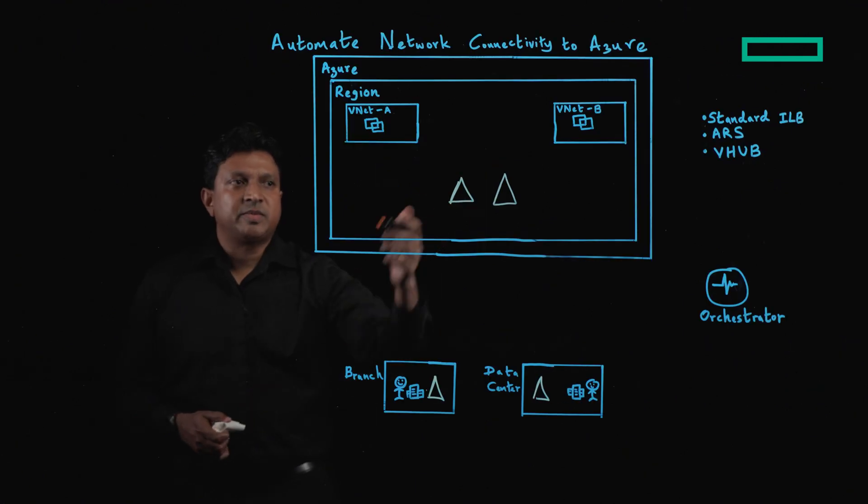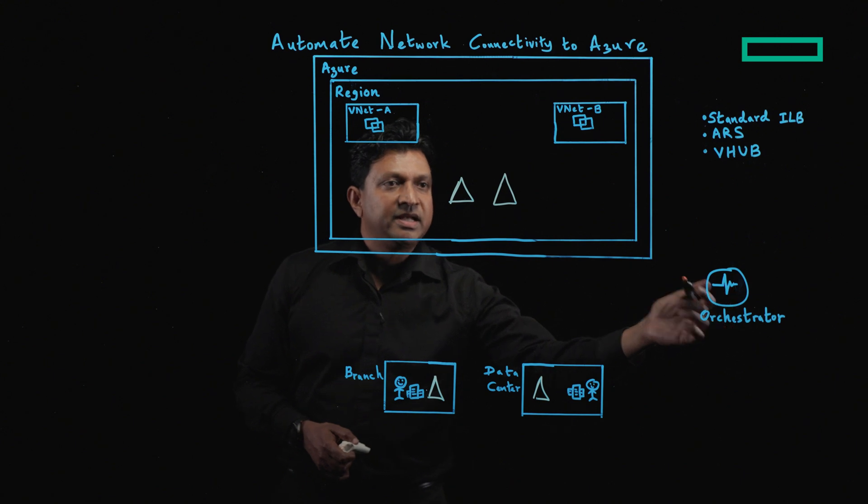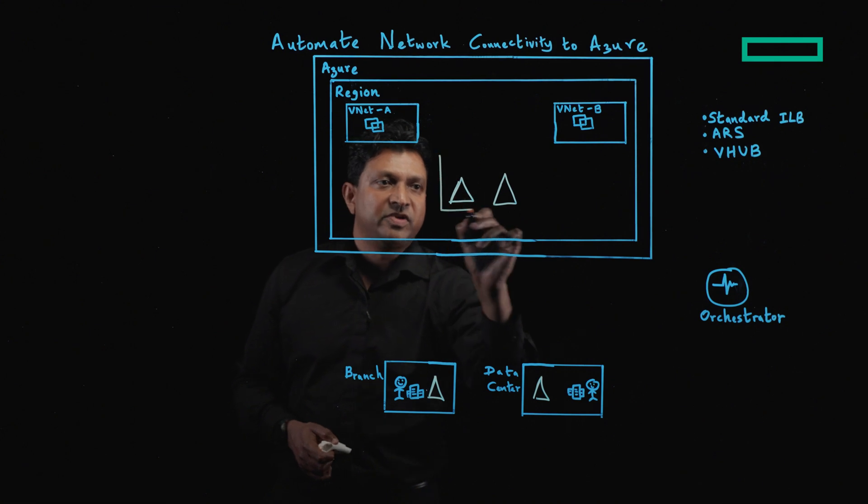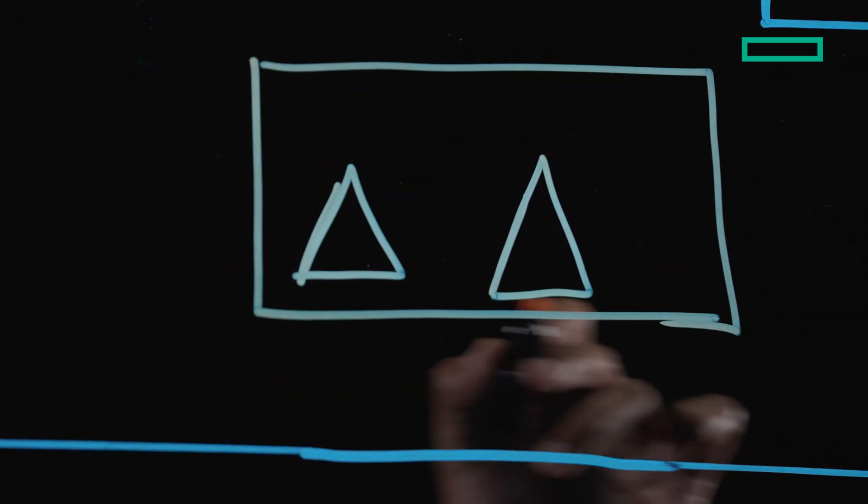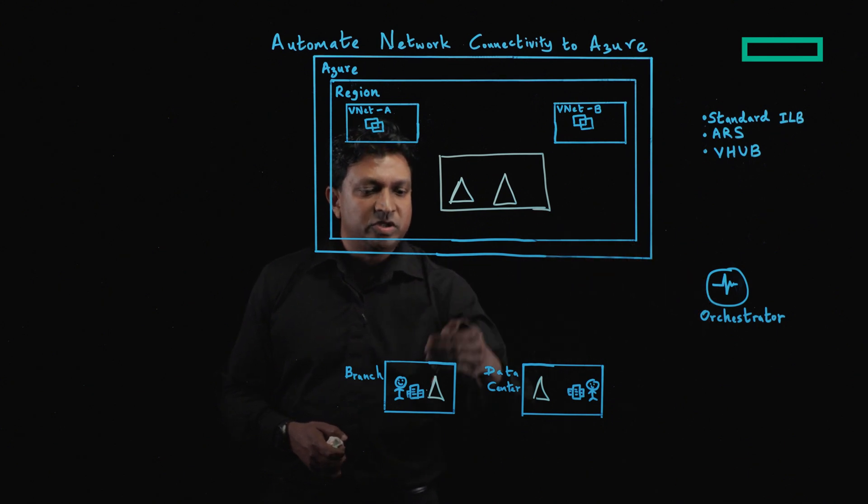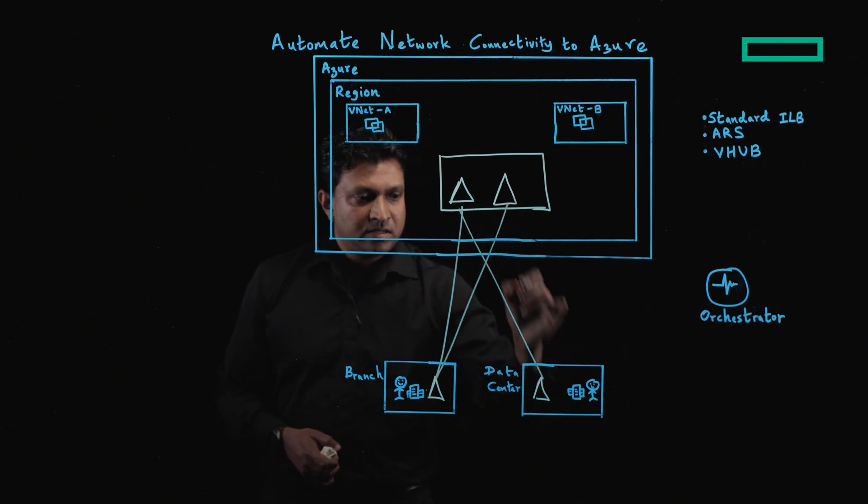To deploy EdgeConnect appliances in the cloud, you can log into the EdgeConnect orchestrator and create one or more EdgeConnect appliances inside a Transit VNet. At this point, you can push your configurations from the orchestrator to each of your appliances, which will allow you to create tunnels between each of your EdgeConnect appliances over the internet.